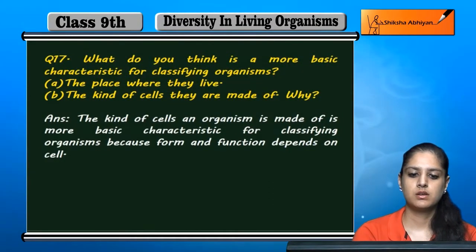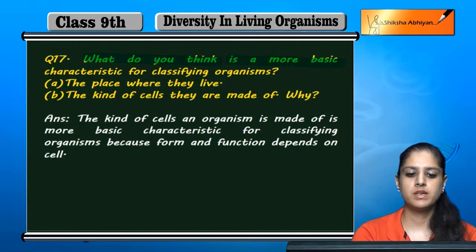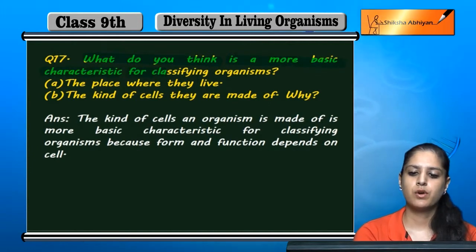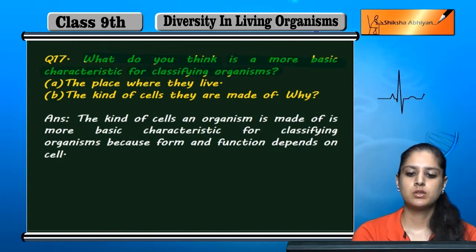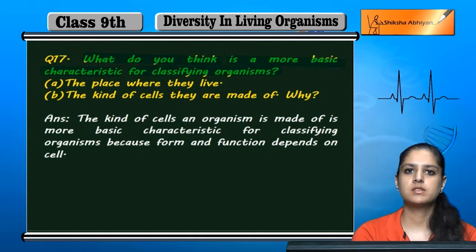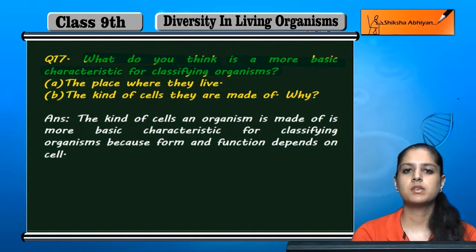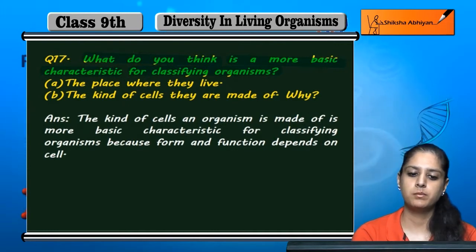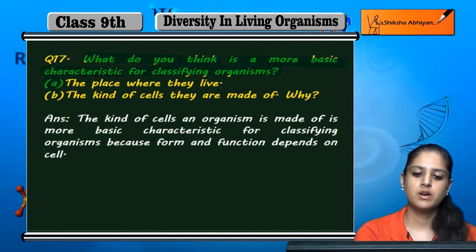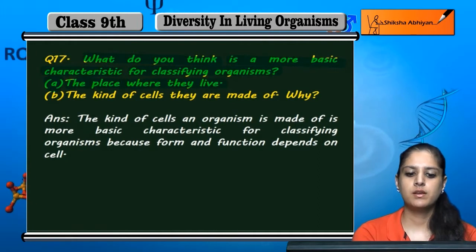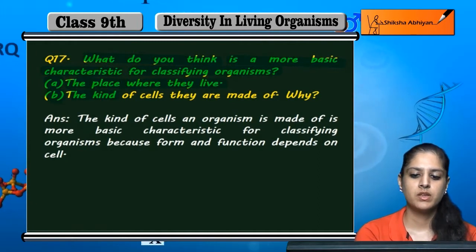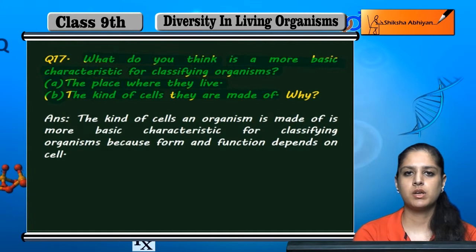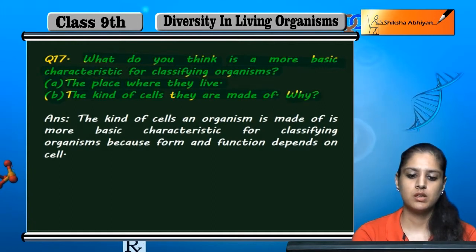Question number 17. What do you think is a more basic characteristic for classifying organisms? We have two points. First, place where they live. Second, kind of cells they are made of — and why.